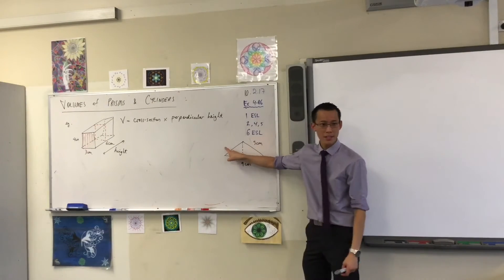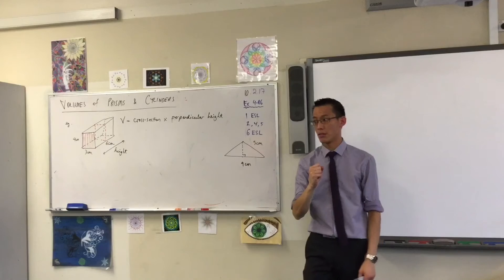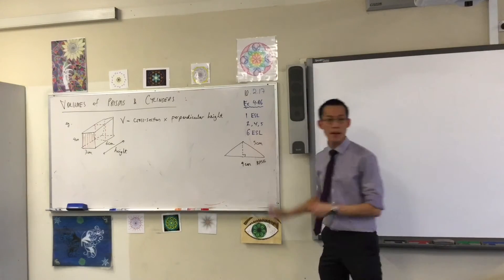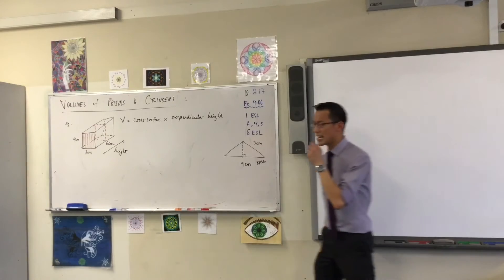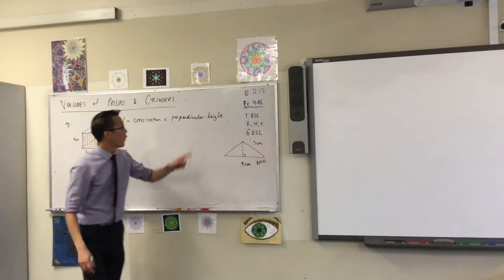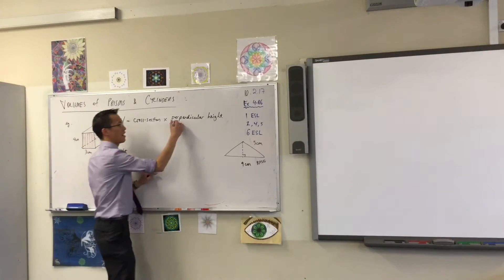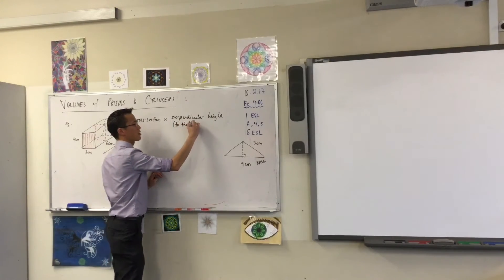What is it perpendicular to? The base. Very good. So, you've got to think about which feature are you measuring from. Now, in our prism, what it's perpendicular to is not the base. There's no, like, which shape is which. It's perpendicular to the cross section.